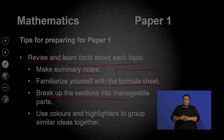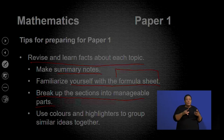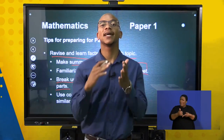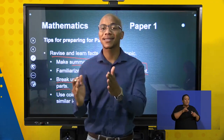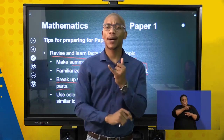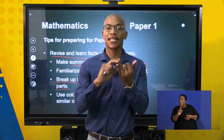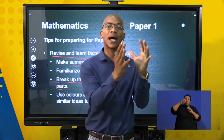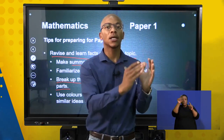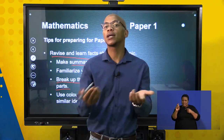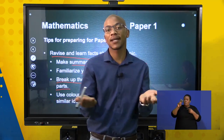You need to break down the sections into manageable parts. Trying to study everything all at once will not assist you. Break them according to links that they have. For example, if you're talking about laws of exponents, exponential functions, and logarithmics — that's one section on its own. You group them according to that because they all relate to exponents. You can break them into sections that you can definitely manage.